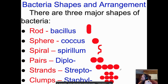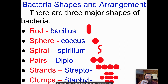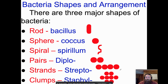Bacterial shape is really important to how we name bacteria. Bacillus is the rod-shaped bacteria, coccus is sphere-shaped, and spirillum are the spiral bacteria. Those are the three main shapes: bacillus, coccus, and spirillum — rod-shaped, spherical, and spiral. We can also describe bacteria based on the colonies they organize into: groups of two are called diplo, strands are called strepto, and clumps are called staphylo.